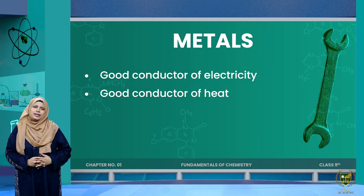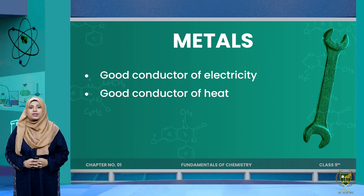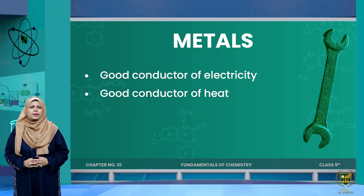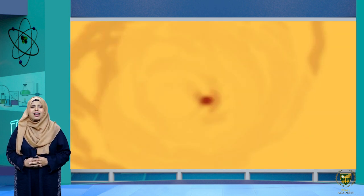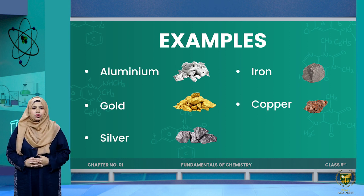The next property is that metals are good conductors of electricity — electric current passes through them. Metals are also good conductors of heat, which is why they are used in cooking processes. Examples of metals include aluminum, gold, silver, iron, and copper.